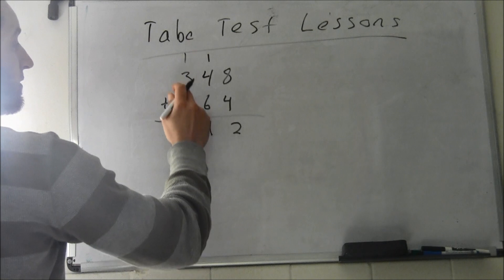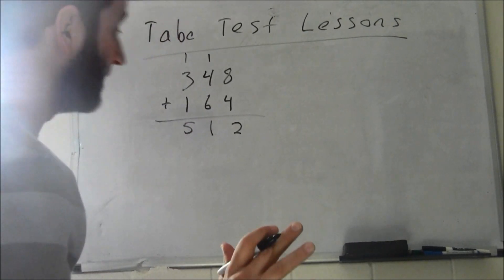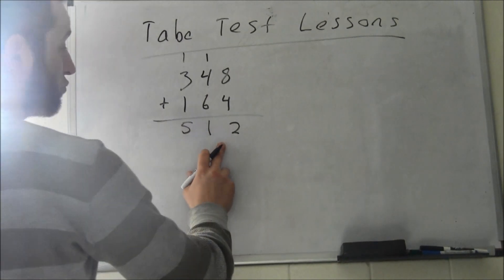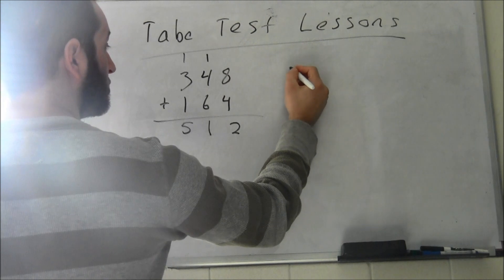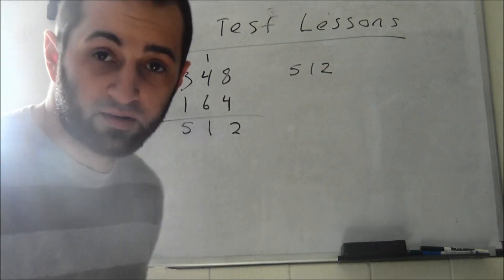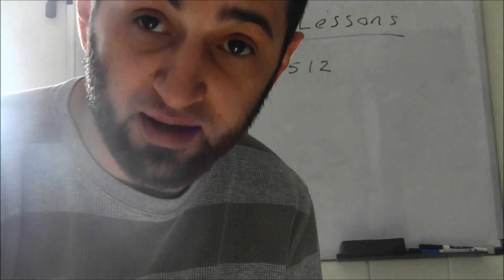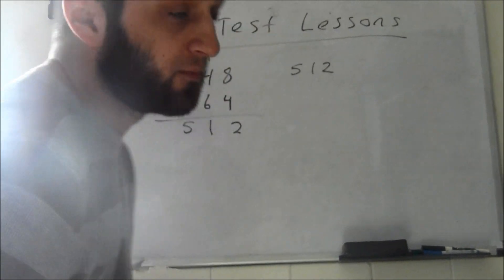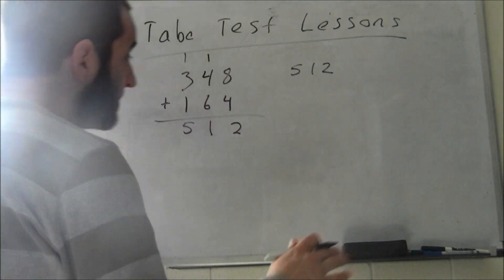You can check this by doing 512 minus 164, which will give you 348. Now when you're tape testing, you won't really have time to check anything. You have a set amount of time to complete your problems, so you just want to hurry through it and make sure you do it right the first time.